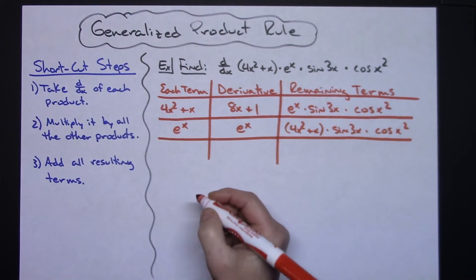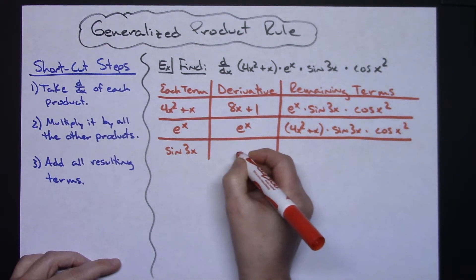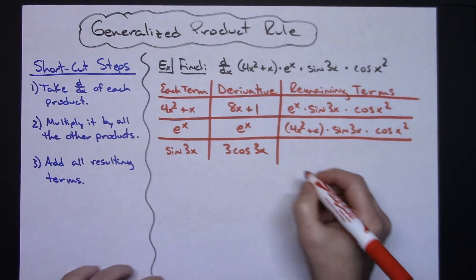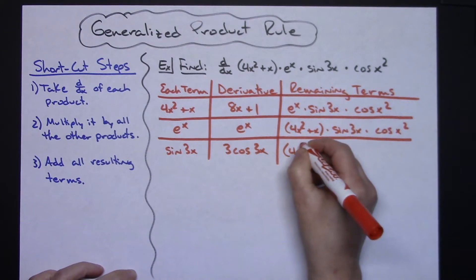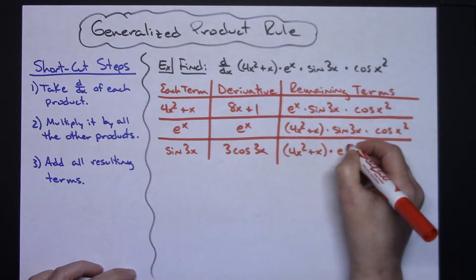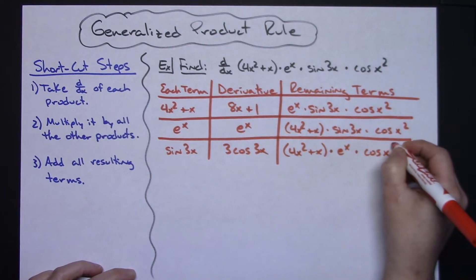Now I'm gonna do my third one. The third term there is sine 3x. Taking the derivative there, I'm gonna have 3 cosine of 3x. Now remaining terms would be this one, this one, and this one. So I'll have 4x squared plus x times e to the x times cosine x squared.